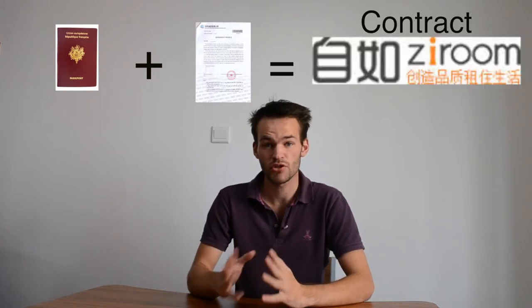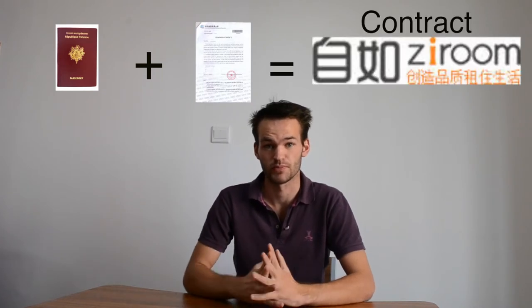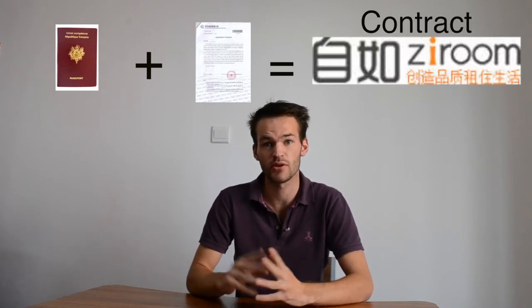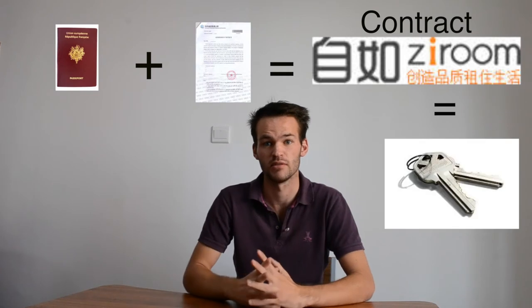Now you need your passport and possibly your admission notice from university. With these documents, you will get your contract for your room. When you sign the contract, you can get your key.